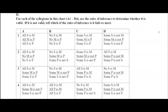If you read it, it makes total sense: all S is M, but no M is P. So if there were an S that is P, it would have to be also an M that is P, because all S is also M. But since no M is P, no S could be either.